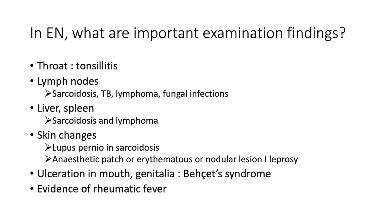What are the important examination findings in the patient with erythema nodosum? Look at the throat for inflamed, red, hot, tender tonsils. Check lymph nodes — the differential includes sarcoidosis, TB, lymphoma, and fungal infections, all of which can cause erythema nodosum. Feel the liver and spleen for hepatomegaly. Look at the nose for lupus pernio, which speaks to sarcoidosis. Check for anesthetic patches or erythematous nodular lesions seen in leprosy. Are there ulcerations in the mouth or genitalia, pointing to Behçet's syndrome, or evidence of rheumatic fever?